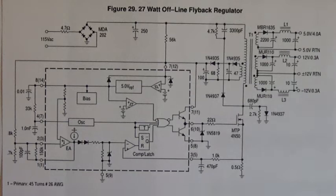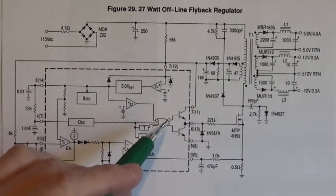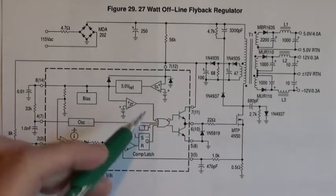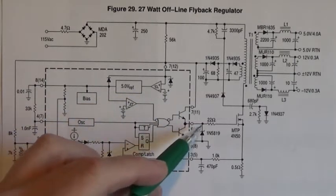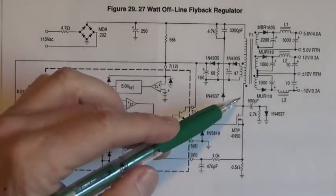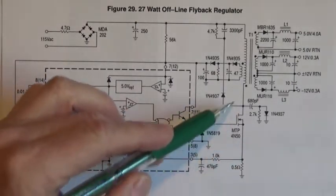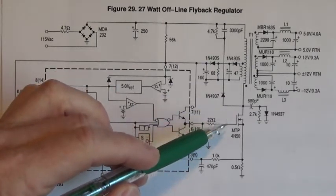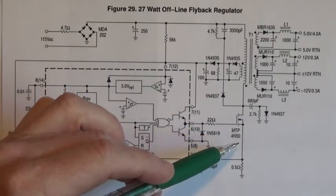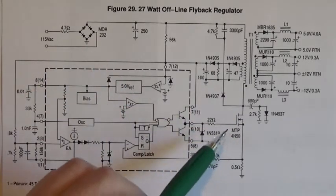Now notice that the gate feeds directly into the output of that UC 3844 through this 22 ohm resistor. If it's shorted through and through, and they usually are, the drain will be shorted to the gate, the gate will be shorted to the source, the drain and source will be shorted.